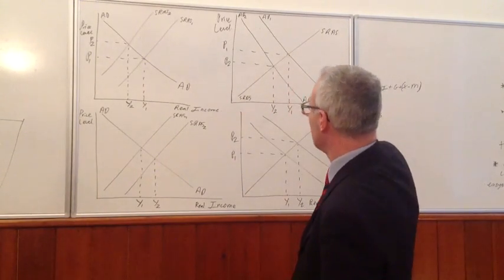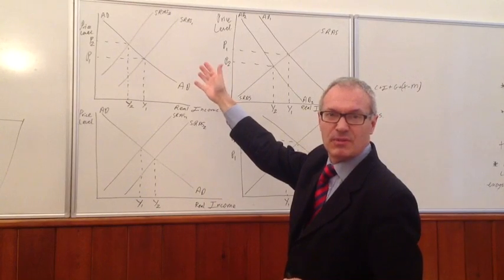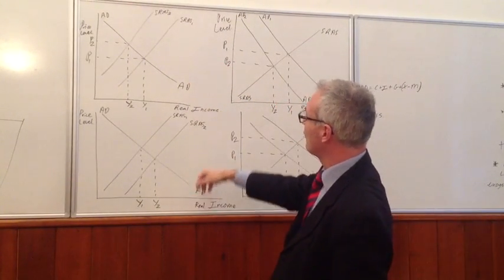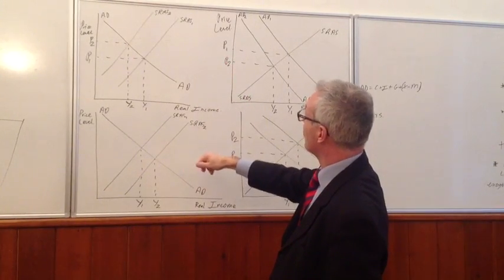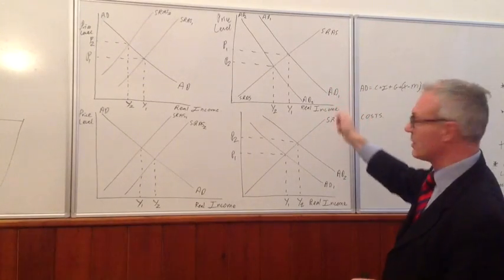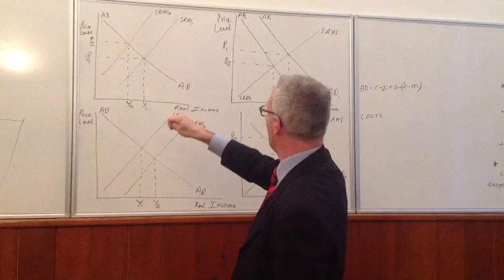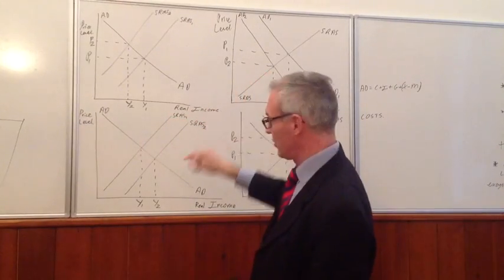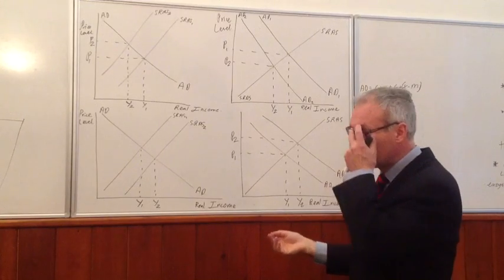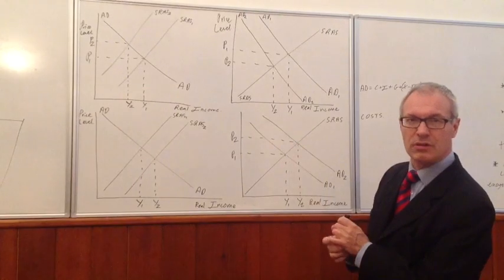So, on the board here, we've got our familiar aggregate demand and aggregate supply analysis. On the left, we've got supply-side shocks. On the right, we have demand-side shocks. On the top, we've got negative shocks, and on the bottom, positive demand and supply-side shocks. Okay, so, let's look at what causes these shocks.